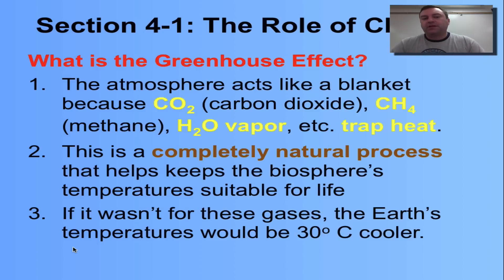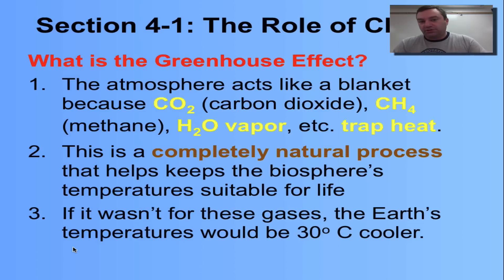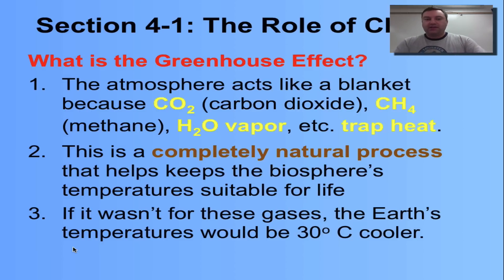So what is the greenhouse effect? We have a number of gases up in our atmosphere that act like a blanket. These gases include carbon dioxide, methane (CH4, natural gas), and water vapor — water in the gaseous state. Together they act like a blanket that traps heat from the sun.